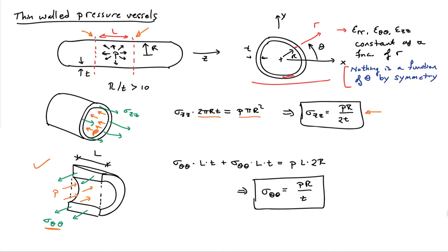And so I have sigma_theta theta acts over the area L times T on the bottom side here, and L times T on the top side here. And then the area over which the pressure acts is just L times the diameter, which is 2R. And since I don't have to worry too much about the finesse of this because I'm assuming that T is small. And so if I can solve this for the hoop stress and find out the hoop stress is pR over T.